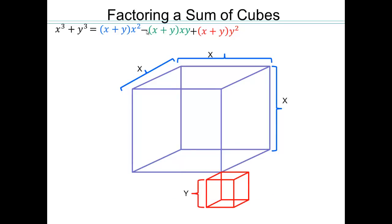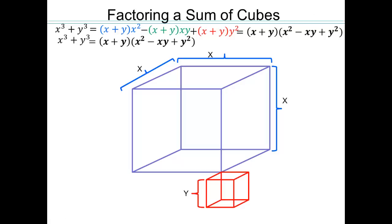So look: we have x cubed plus y cubed. We added the first two prisms and then removed the bottom back piece. Now look at the formula that jumps out: x plus y is the greatest common factor, and you're left with x squared minus xy plus y squared. This is very similar to the difference of cubes formula. The only difference is: instead of subtraction in the first factor, we have a plus. Then in the trinomial, the middle sign is minus. If this first sign is plus, then the middle term is minus.